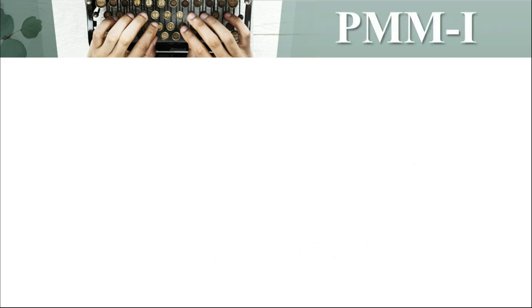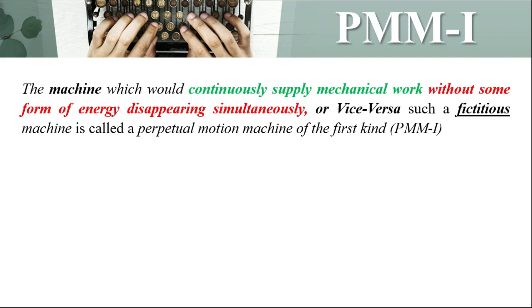Now what is PMM-I? The machine which would continuously supply mechanical work without some form of energy disappearing simultaneously, or vice versa. Such a fictitious machine is called a perpetual motion machine of the first kind, that is PMM-I.